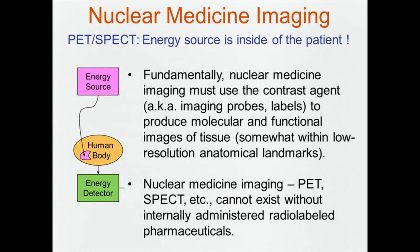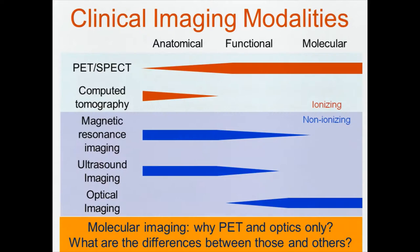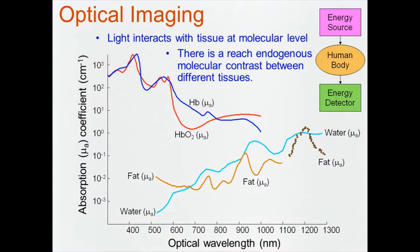PET fundamentally uses contrast agents — or imaging probes or labels — to produce molecular and functional images within limited anatomical landmarks. If you take away the radiolabeled pharmaceuticals, nuclear medicine does not exist. The reason PET and SPECT can provide molecular information is because they use contrast agents. In optical imaging, the situation is drastically different because light, by definition, interacts with tissue at the molecular level. So by default, you should be able to get molecular images, and there's also rich endogenous molecular contrast between different types of tissues.